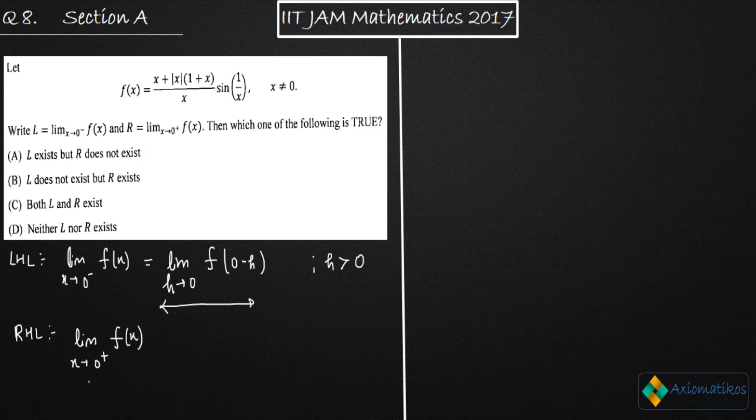Now for the right hand limit the same thing will work. The limit x goes to zero plus. These two are the representation for the left hand and right hand limit. These representations are defined like this, where h is greater than zero. That means h is going from the right direction to zero.